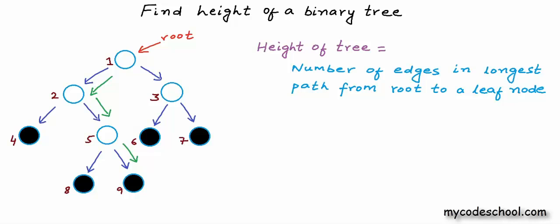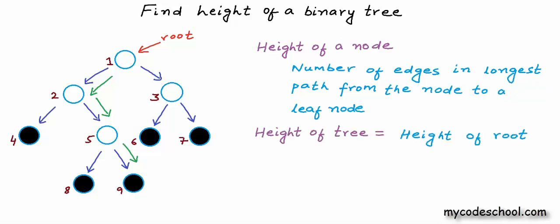Actually we can define height of a node in the tree as number of edges in longest path from that node to a leaf node. So height of a tree basically is height of the root node.